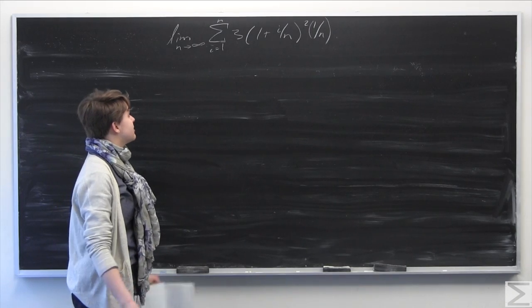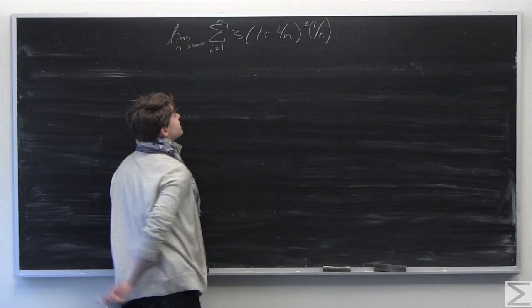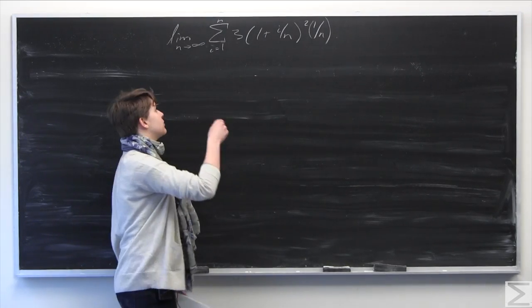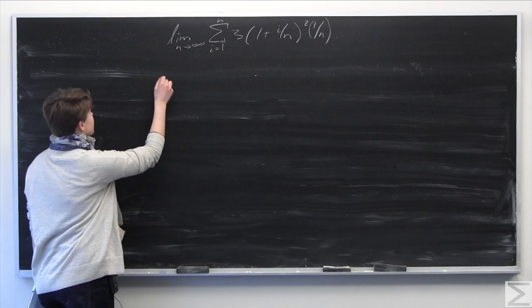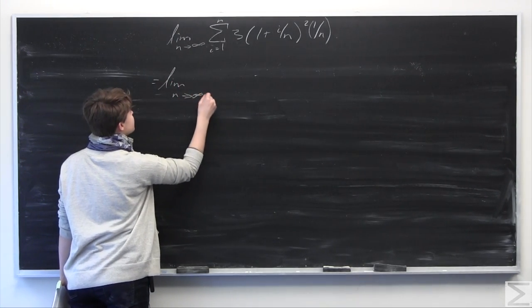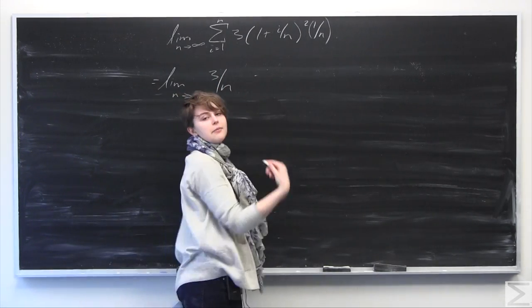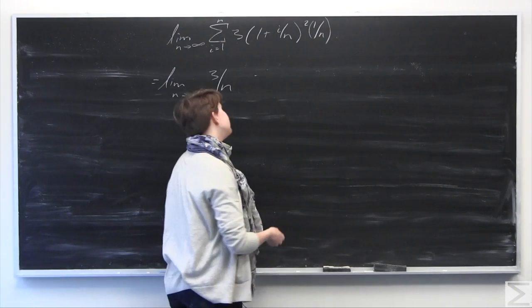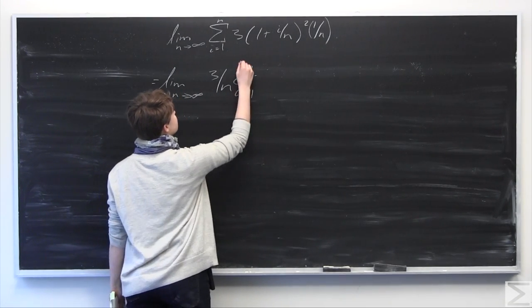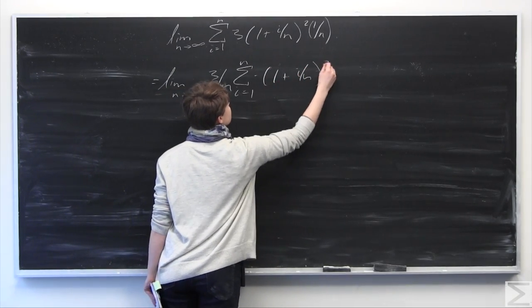We're going to start evaluating the summation by bringing the 3 and the 1 over n outside. The 1 over n does not depend on i, so we can bring it outside. That gives us the limit as n goes to infinity of 3 over n times the sum from i equals 1 to n of (1 plus i over n) squared.